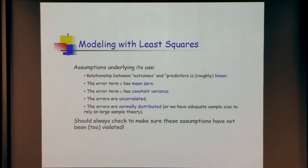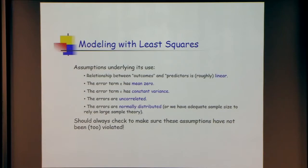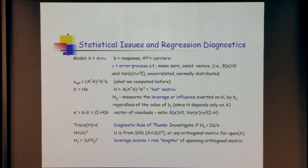A statistical perspective: when is least squares the right thing to do? Roughly, it's when the relationship between outcomes and predictors is roughly linear and the error term is nice. You think of b as equal to Ax-star plus epsilon, where epsilon is some Gaussian or nice error — mean zero, constant variance, uncorrelated, roughly normal. A prudent data analyst will check whether these assumptions have been violated and how egregiously.